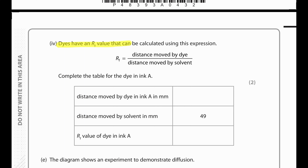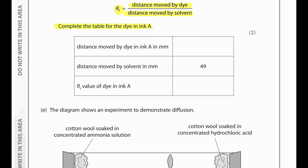The dyes have an RF value calculated using this expression: RF equals distance moved by the dye divided by distance moved by the solvent. Complete the table for the dye in ink A. The distance moved by the dye is 18 mm, distance moved by solvent is 49 mm, so to find the RF value we divide 18 by 49.